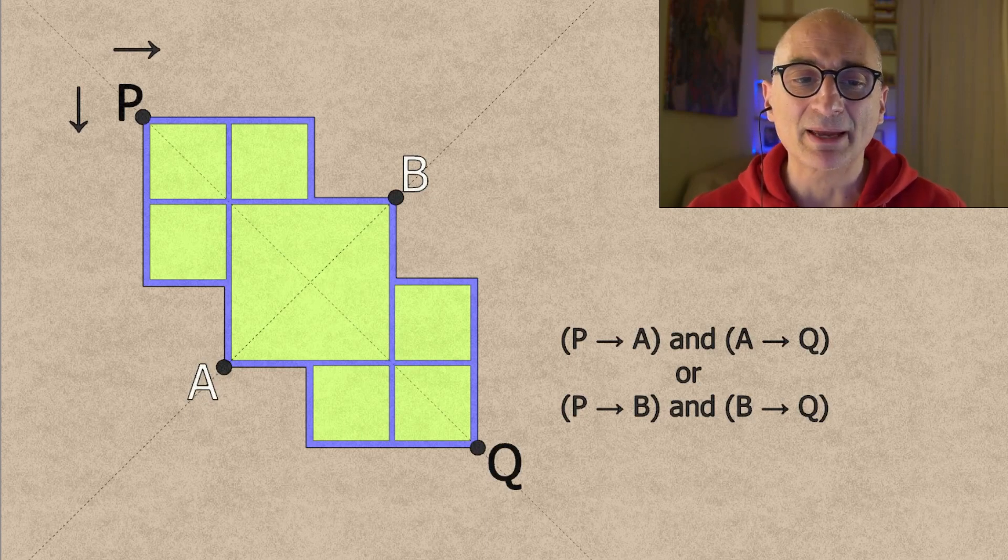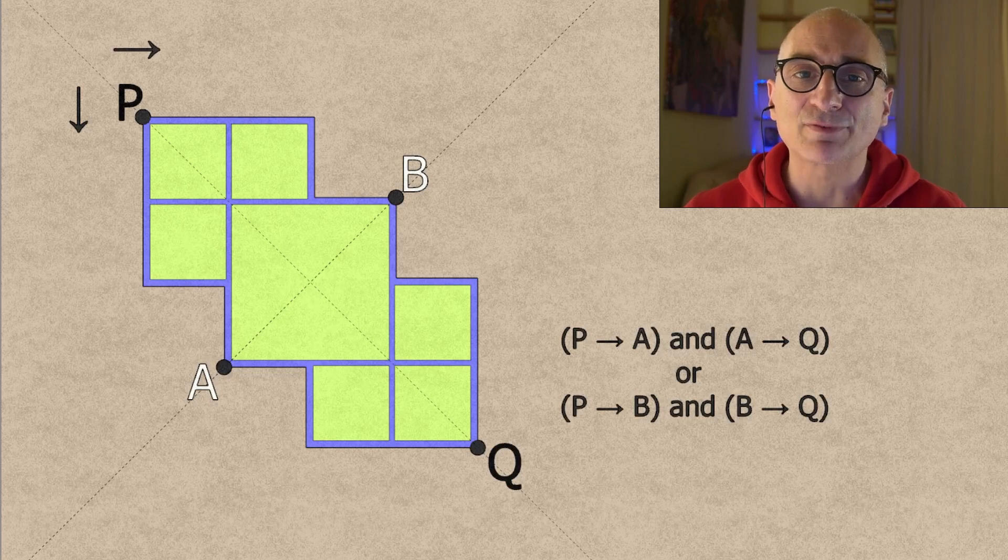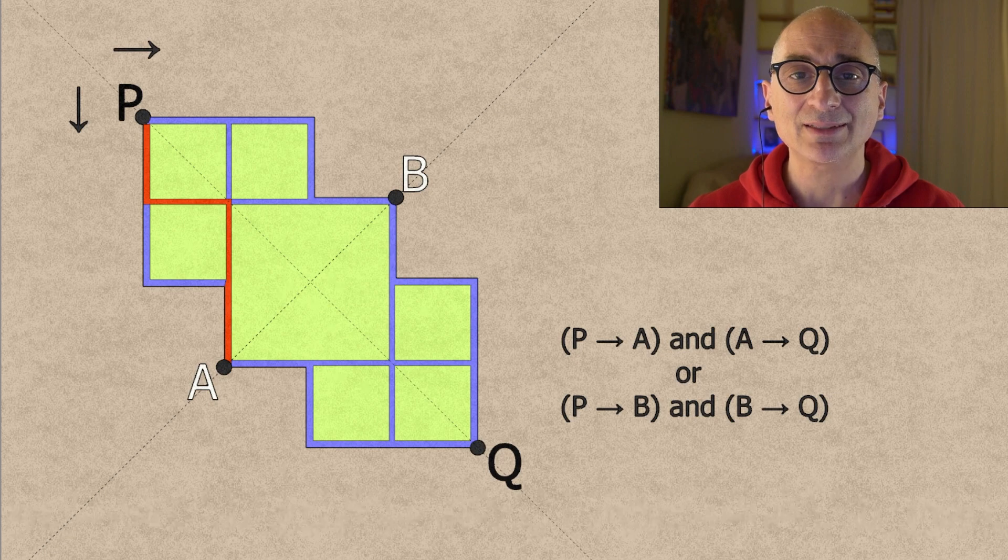Everything is really symmetrical in this puzzle. So now let's calculate the paths from P to A. There's one like that, there's two like that, and there's three like that.